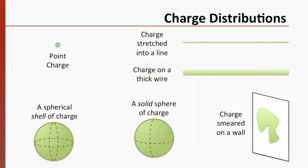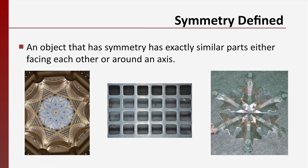Electric charge can come as a single point, as an electron or a proton, but it can also take other shapes. It might be stretched into a line, spread throughout a volume, or spread over a surface. Not a Gaussian surface. Remember, that's something we make up to solve a problem. Charge is spread out on a physical object. You can stretch the charge out into lines, spread it on thick wires or spherical shells, build a solid ball out of it, or even just smear it around on an object. An object has a symmetry when it has exactly similar parts that are either facing each other, or arranged around an axis. On the screen are some pictures of objects that have symmetry.